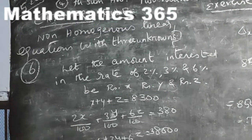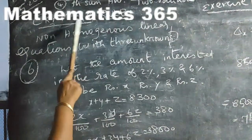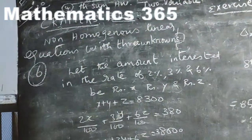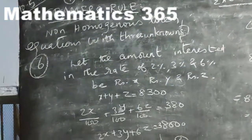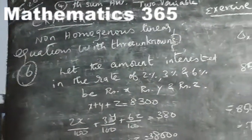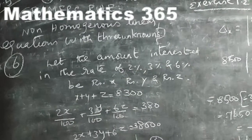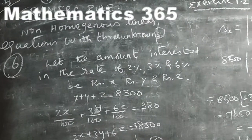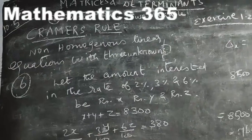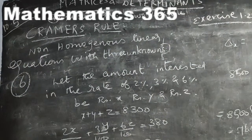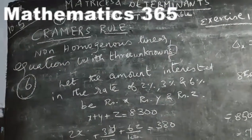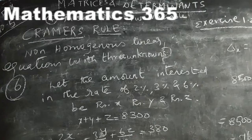First, the 6th sum we will perform in class; the 5th sum is homework; the 4th sum is homework with 2 variables. The 4th sum: 3x plus 4y equal to 780, where x is horse riding and y is quad bike riding, and 2x plus 3y equal to 516.